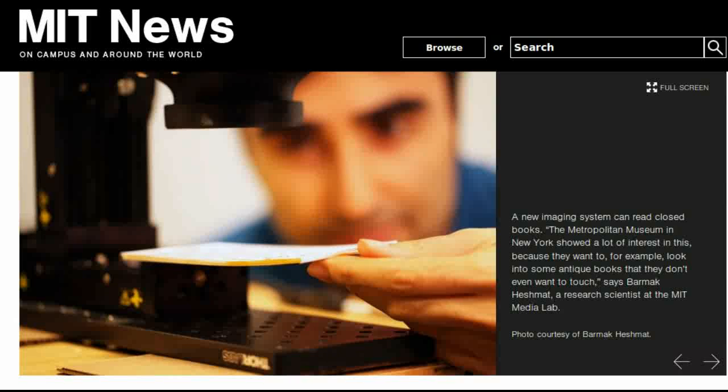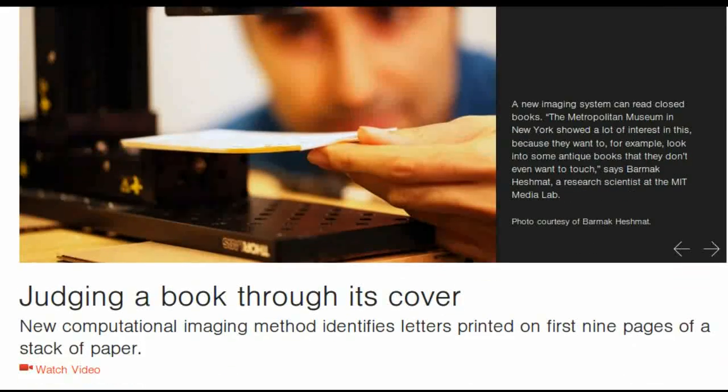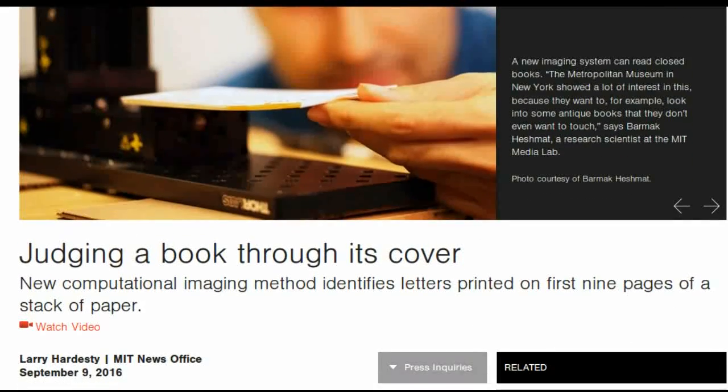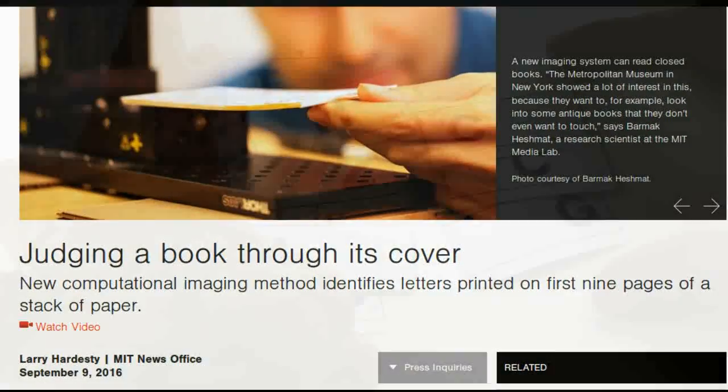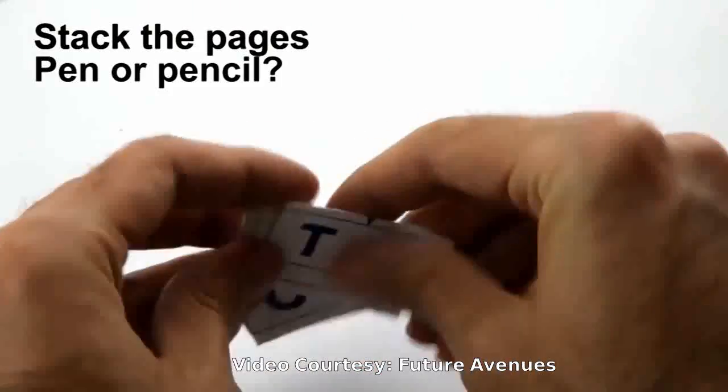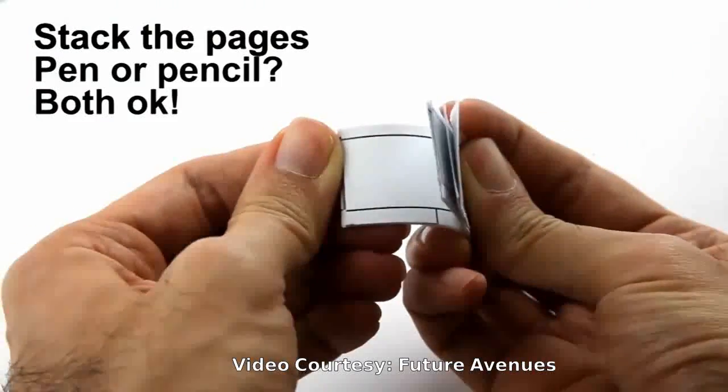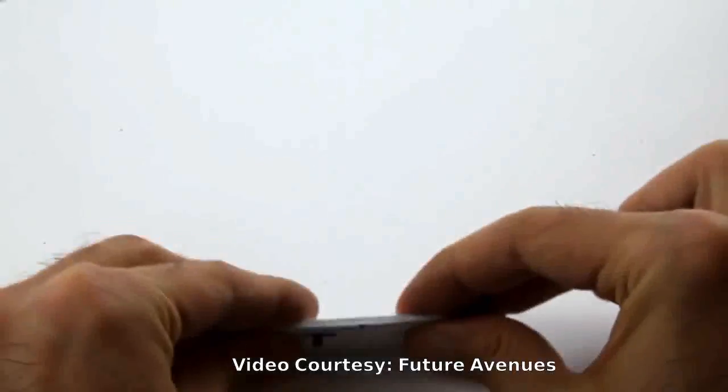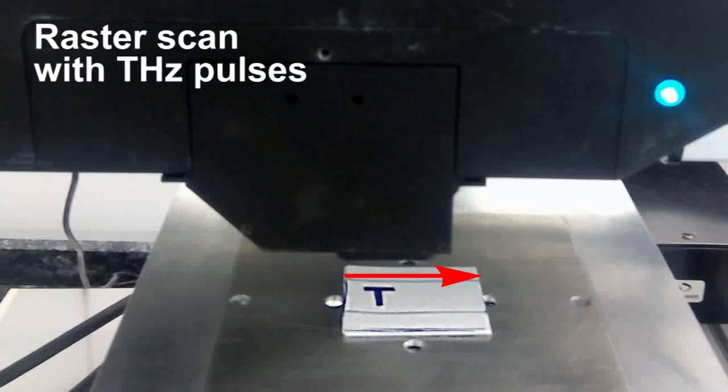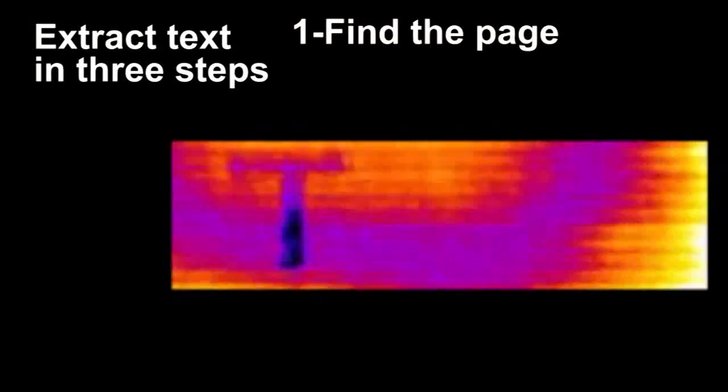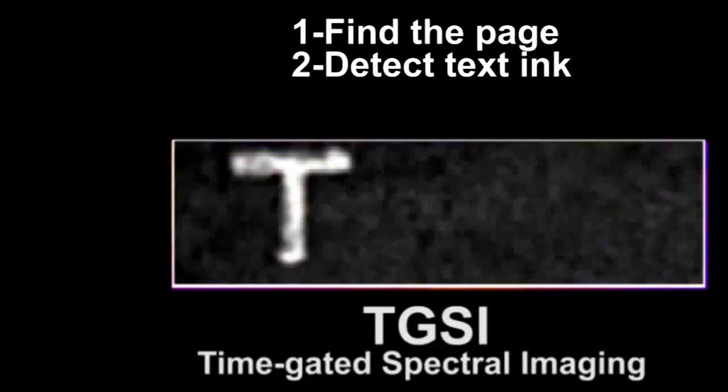MIT researchers and their colleagues are designing an imaging system that can read closed books. In the latest issue of Nature Communications, the researchers describe a prototype of the system which they tested on a stack of papers, each with one letter printed on it. The system was able to correctly identify the letters on the top nine sheets.